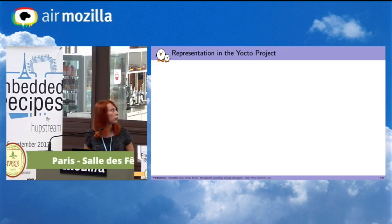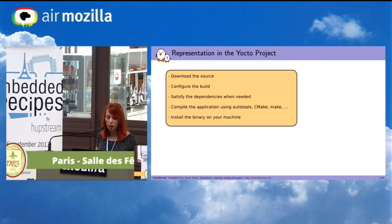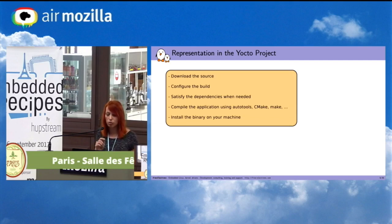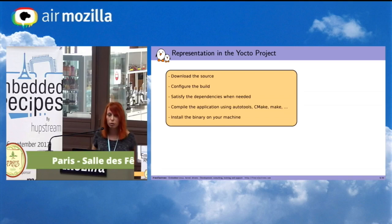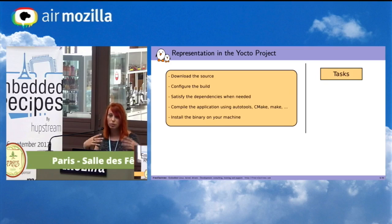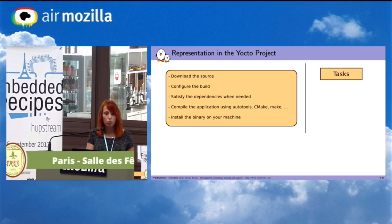Let's see the representation in the Yocto project. When you want to compile an application, you will have several steps. First, you need to download the source, configure the build, satisfy dependencies, compile the application using AutoTools, CMake, or Make — it depends on the application — and finally install the binary on your machine. All these steps in the Yocto project, we call them tasks. So you will have a task to download the source, a task to configure the build, and so on.